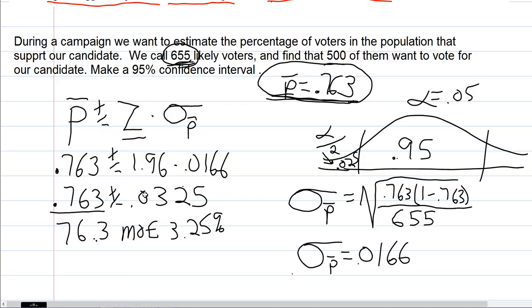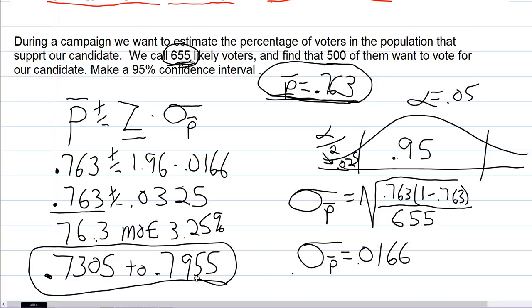We could represent it as a range: 0.763 minus 0.0325, which is 0.7305, to 0.763 plus 0.0325, which is 0.7955. We're 95 percent sure that the truth is somewhere in that range, and there's a five percent chance, that's the alpha, that it's not.